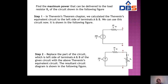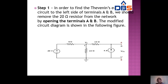To find the maximum power that can be delivered to load resistance RL of a given circuit, we use the Thevenin equivalent circuit. First, open the terminals AB by removing the 20-ohm load resistor. Then calculate the Thevenin voltage Vth by applying nodal analysis.